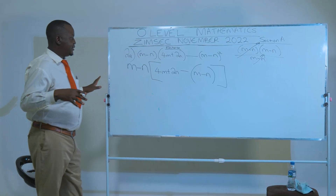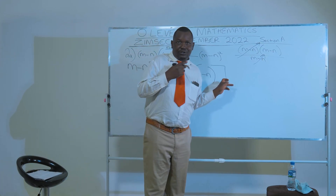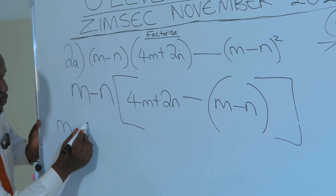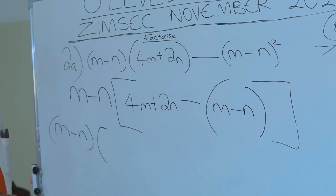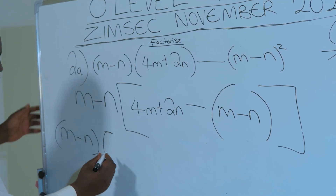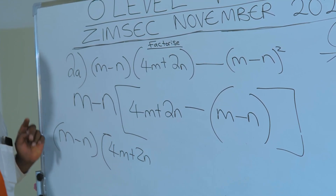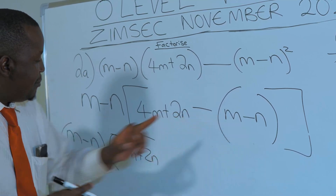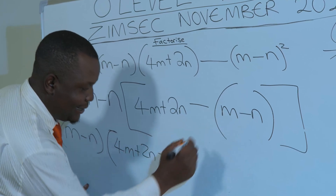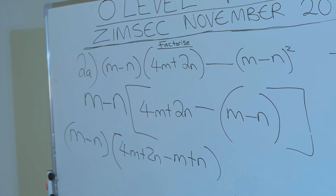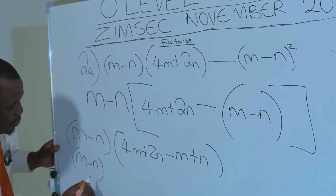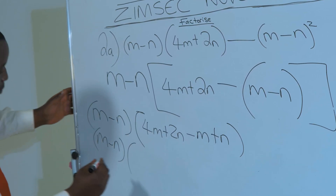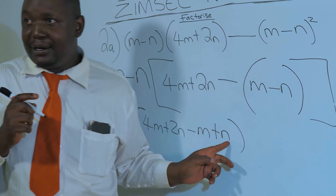But we are not yet done. We need to simplify whatever is in these square brackets. So we have 4M plus 2N, then we have a negative sign, then a bracket with M minus N. Opening the bracket: 4M minus M gives 3M, and 2N plus N gives 3N.